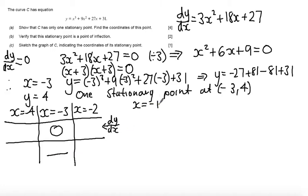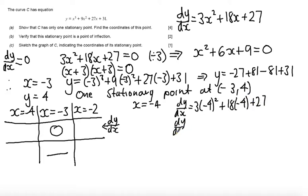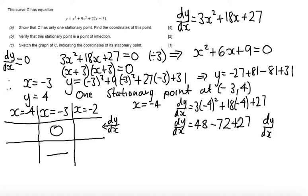At x equals minus 4: dy by dx equals 3 lots of minus 4 squared plus 18 lots of minus 4 plus 27, which gives 3 times 16 equals 48, plus 18 times minus 4 which is minus 72, plus 27. So dy by dx equals 75 minus 72 which is 3 — the gradient here is positive, giving a slope upwards.